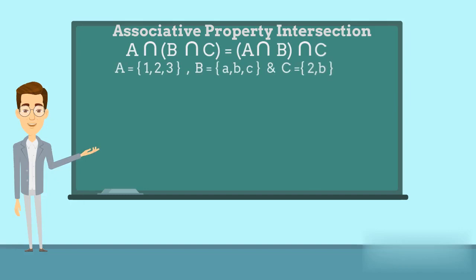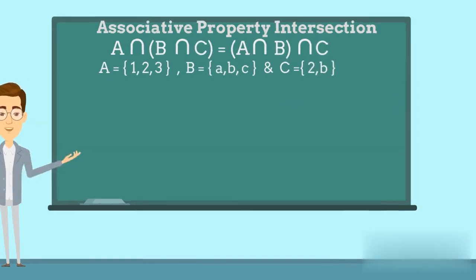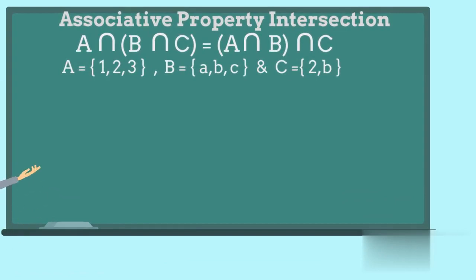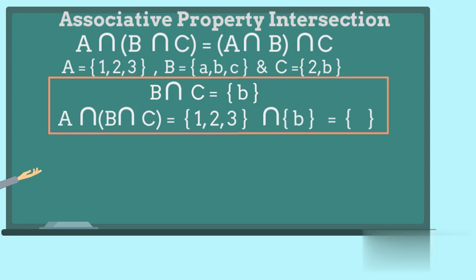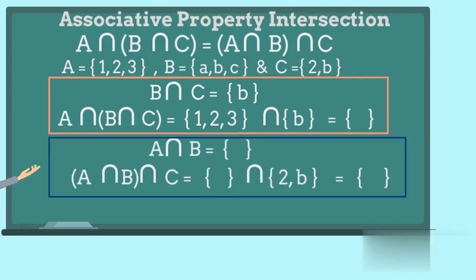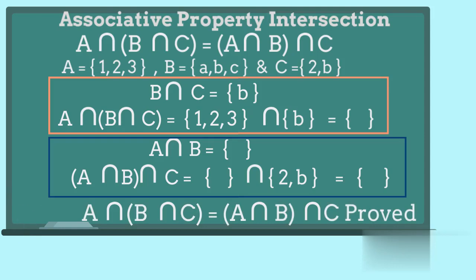Considering the same sets A, B, and C, to prove the associative property of intersection, we need to prove that A intersection (B intersection C) is equal to (A intersection B) intersection C. We solve B intersection C first, which contains just one element, B. Then the result of A intersection (B intersection C) is the empty set. Similarly, we find the value of (A intersection B) intersection C, which is also the same. This proves the associative property of intersection of sets.